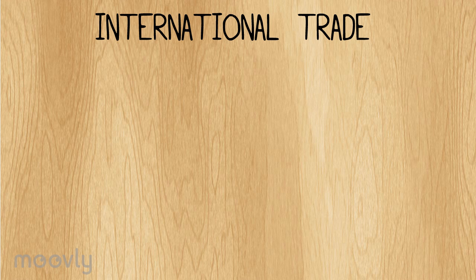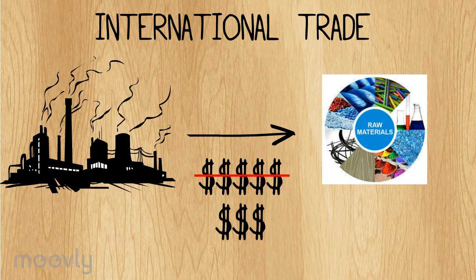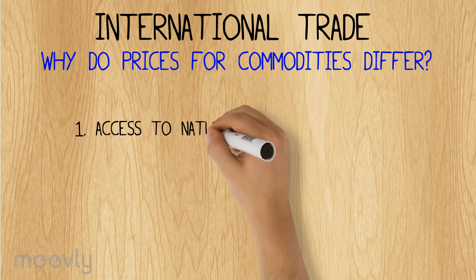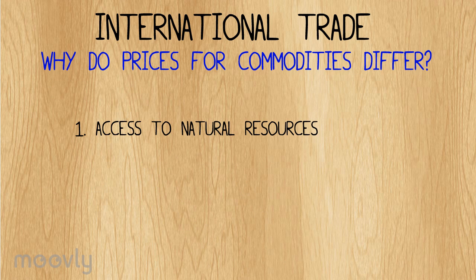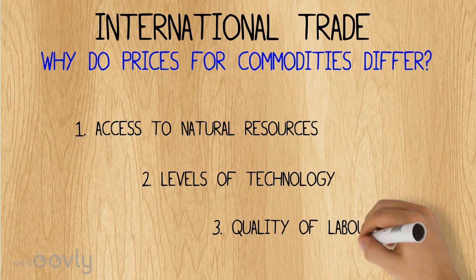Therefore, producers can purchase raw materials for a cheaper price. However, the price for a commodity differs due to access to natural resources, levels of technology, and the quality of labor forces.